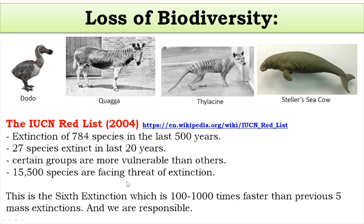Extinction in general is a natural phenomenon. Extinction has occurred in the past and is going on right now. Species go extinct when they are not able to cope with environmental changes — whether physical or biological changes. If species are not able to cope with those changes, they go extinct since they are not able to breed.